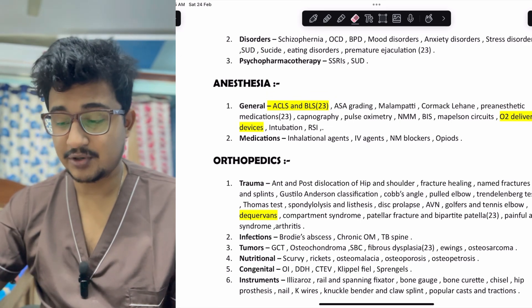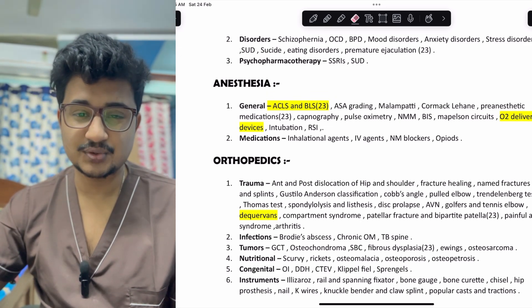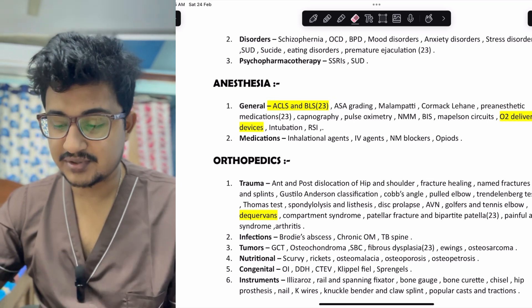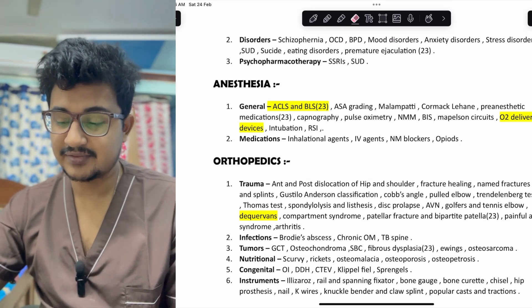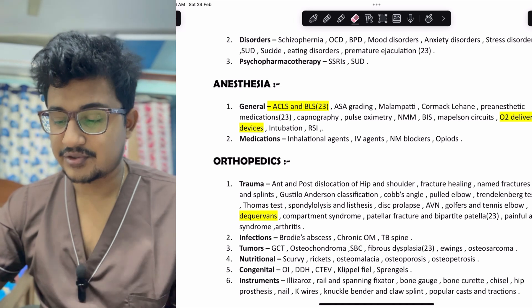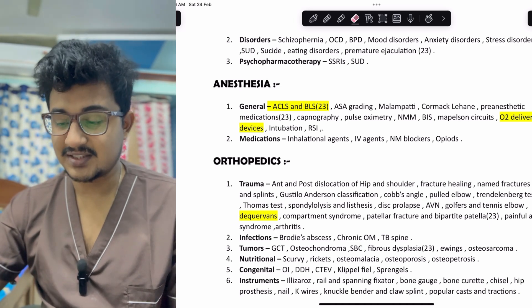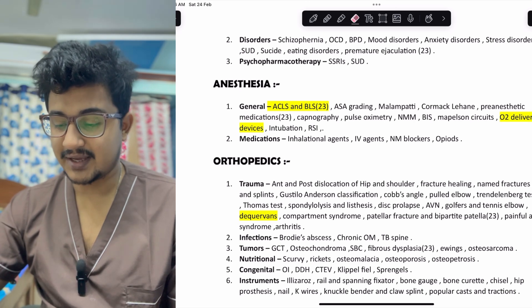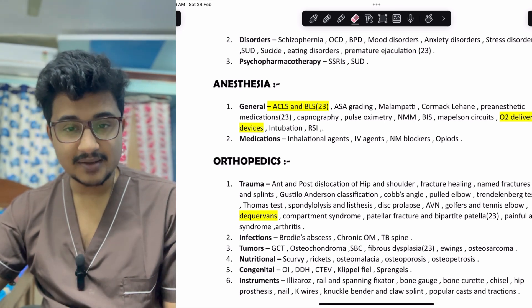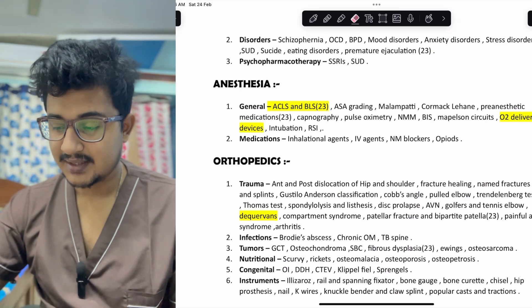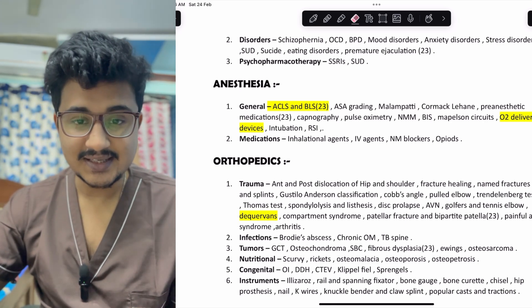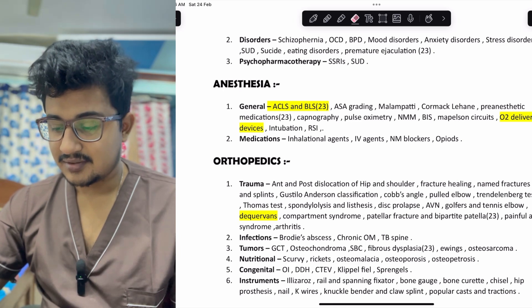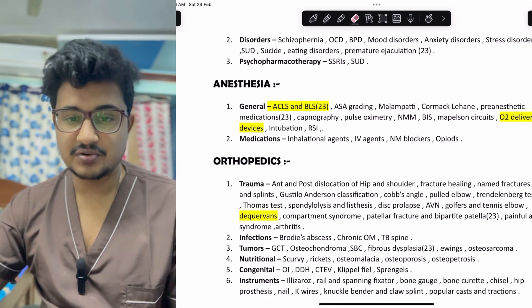Nutritional deficiency basics about scurvy and rickets are in pediatrics too, but covered here. Also important are osteomalacia, osteoporosis, osteopetrosis, and in congenital conditions: osteogenesis imperfecta, developmental dysplasia of the hip, CTEV, Klippel-Feil, and Sprengel's deformity. Some instruments are also important in orthopedics — spanning fixator was asked in a recent NEET; also bone curette, chisel, gouge, nail, K-wires.